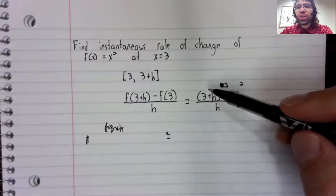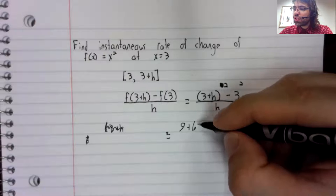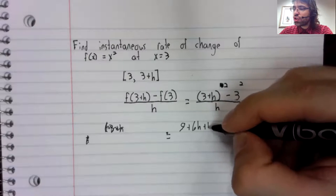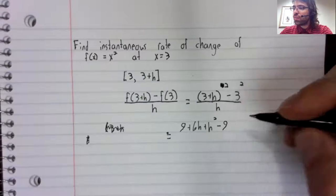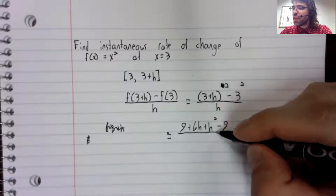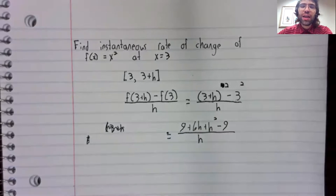And now we can foil this: nine plus six h plus h squared. We've got this minus nine, all divided by h.